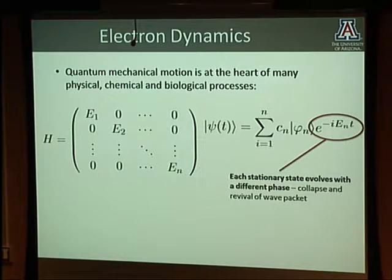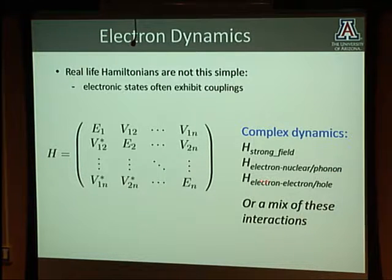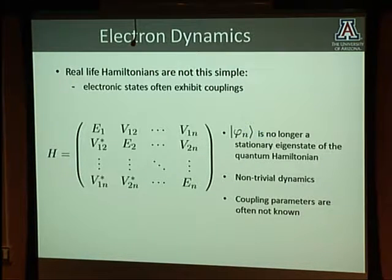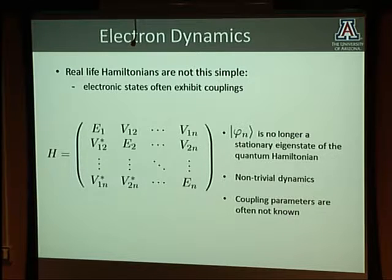However, if there are other contributions to the Hamiltonian—from strong fields, coupling of electrons with nuclear motion or phonons in materials, or correlations between electrons and holes—you get off-diagonal matrix elements. You could also have a mixture of these interactions. Now the Hamiltonian is complicated and φₙ are no longer stationary eigenstates. The dynamics becomes non-trivial, and you may not know the coupling parameters a priori, so you must experimentally figure out what's happening to the electronic wave packet.